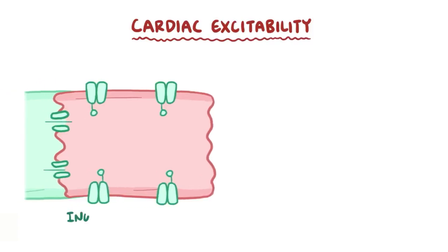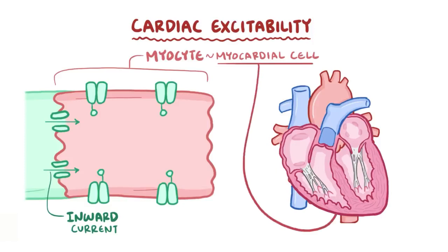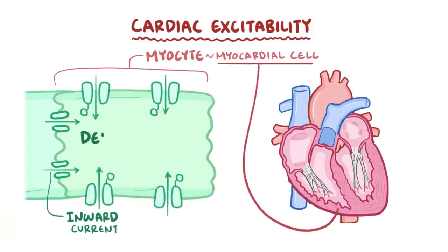Cardiac excitability refers to the amount of inward current needed by myocytes, otherwise known as myocardial cells, which are the cells in the muscular middle layer of the heart, to depolarize or generate an action potential.